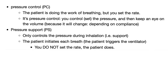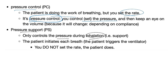Pressure control: you can set the respiratory rate, but you control the pressure and watch the volume. If volume changes, compliance is changing. Pressure support is different: you only control the pressure during inhalation — hence 'support.' The patient does the heavy lifting; the machine only assists. Since it's called pressure support, the patient initiates each breath and triggers the vent. Since it's support, you do not set the rate — the patient does.